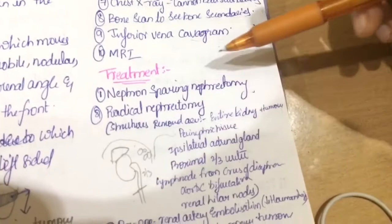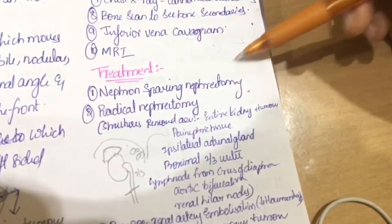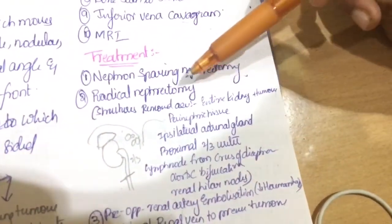Treatment is nephron sparing nephrectomy. Nephron sparing nephrectomy, nephrons are sparing and nephrectomy is done. Radical nephrectomy.